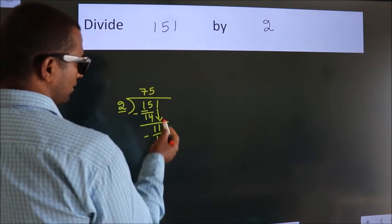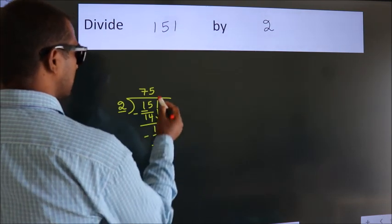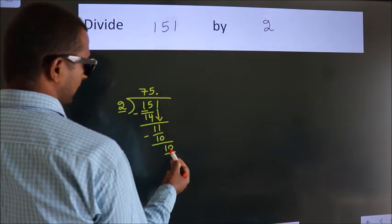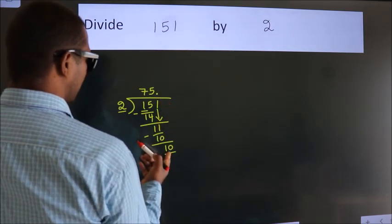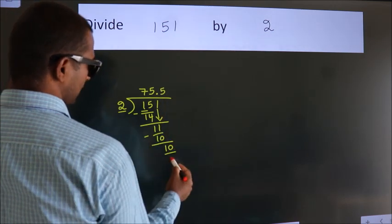After this, no more numbers to bring it down. So, what we do is, we put dot take 0. So, 10. When do we get 10? In 2 table, 2 5s 10.